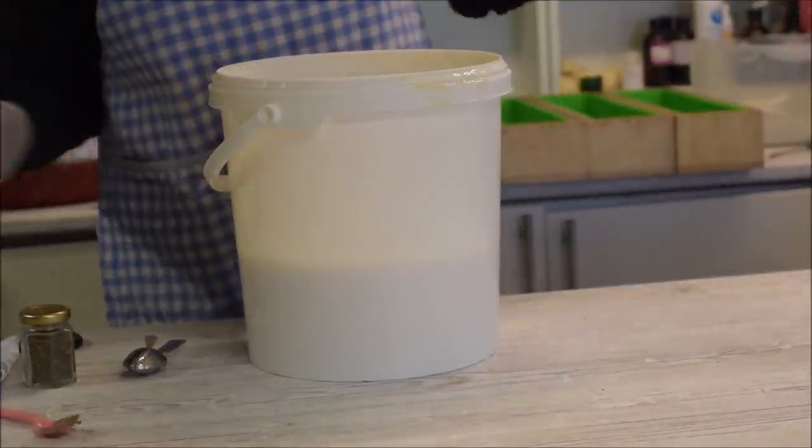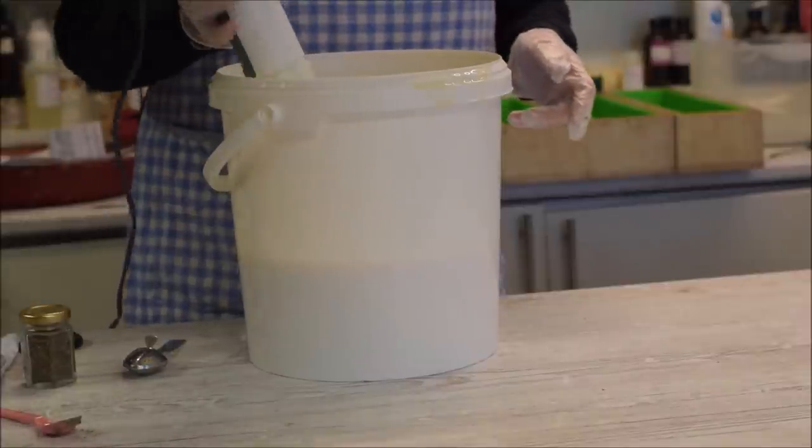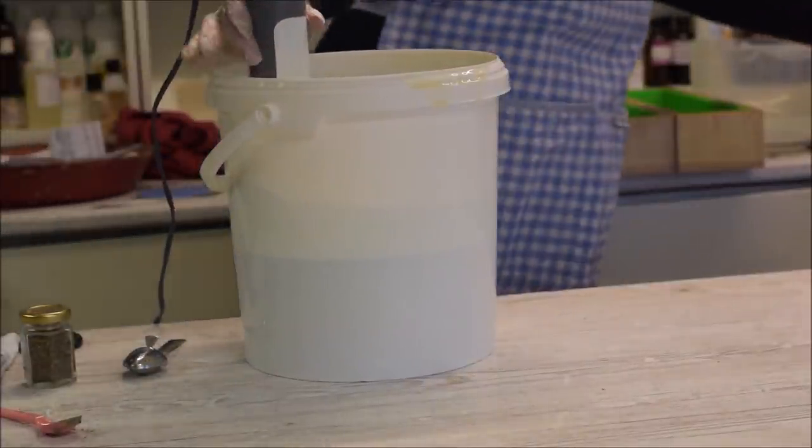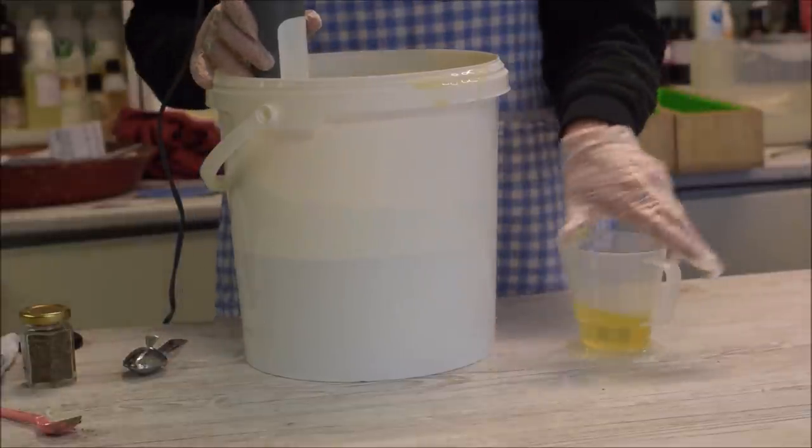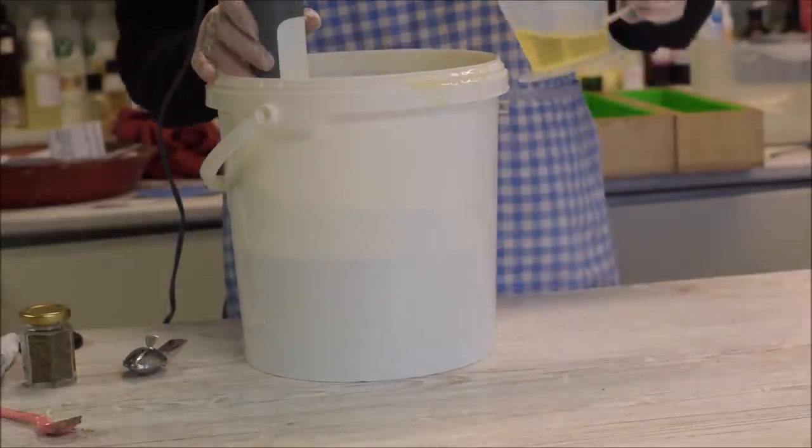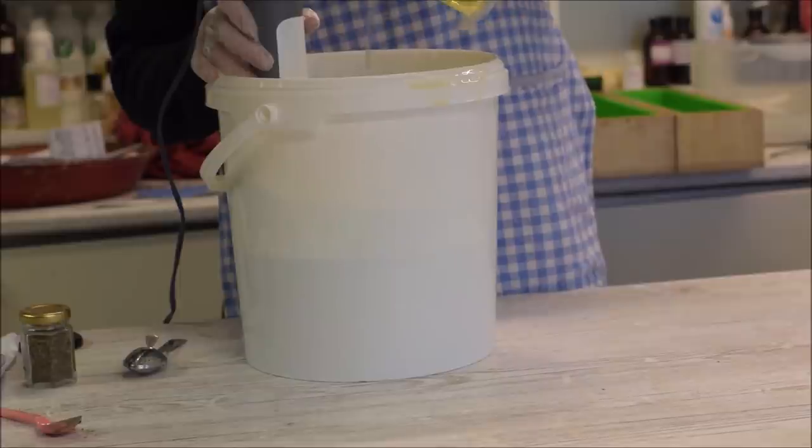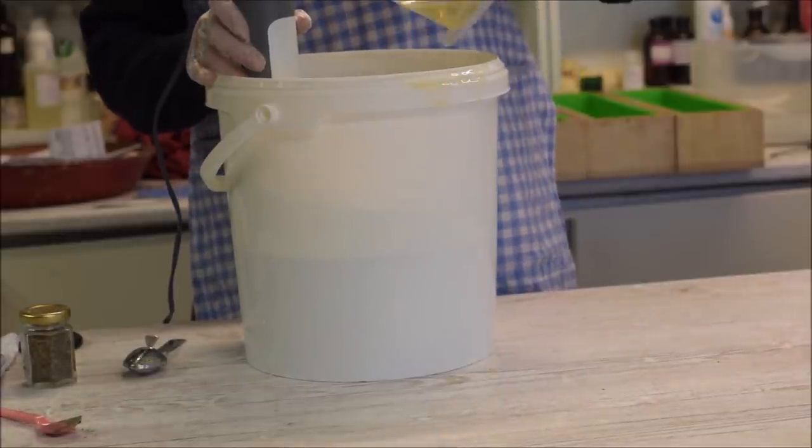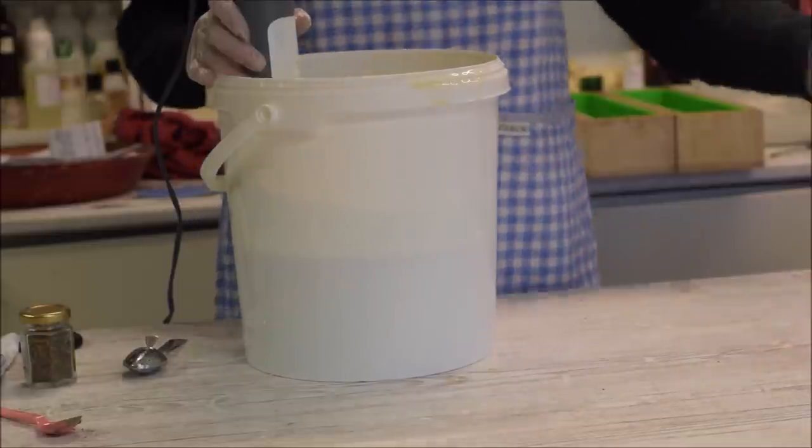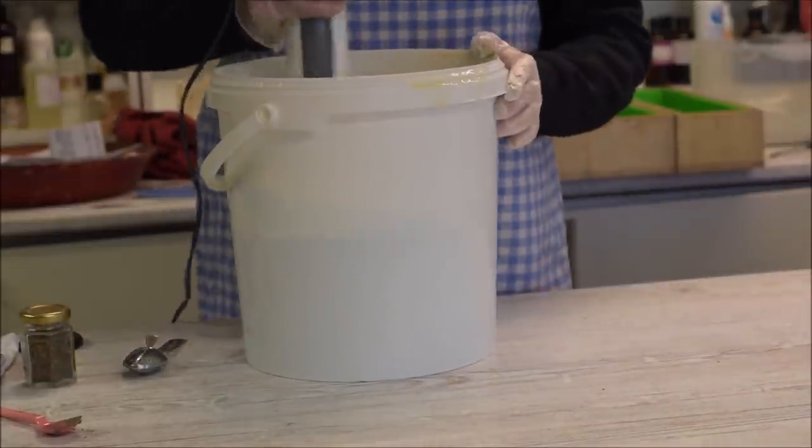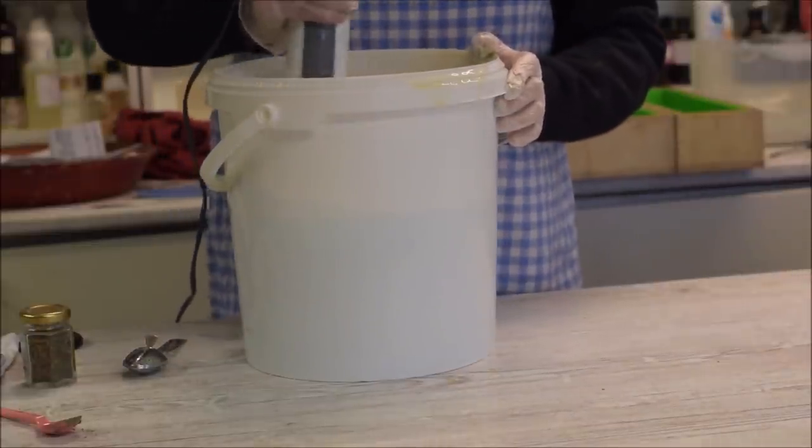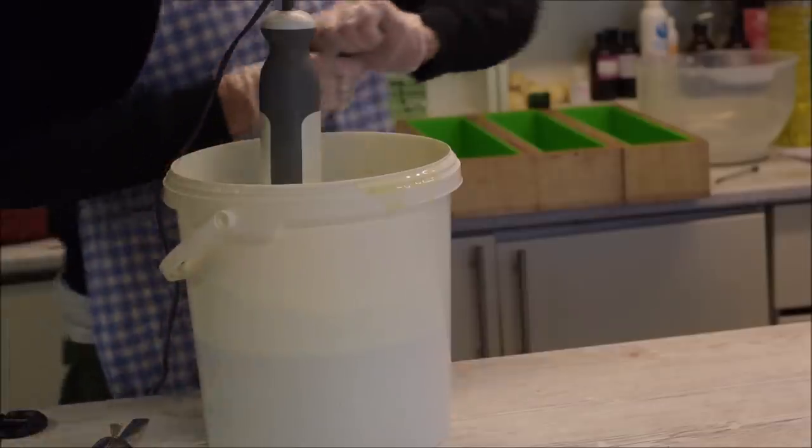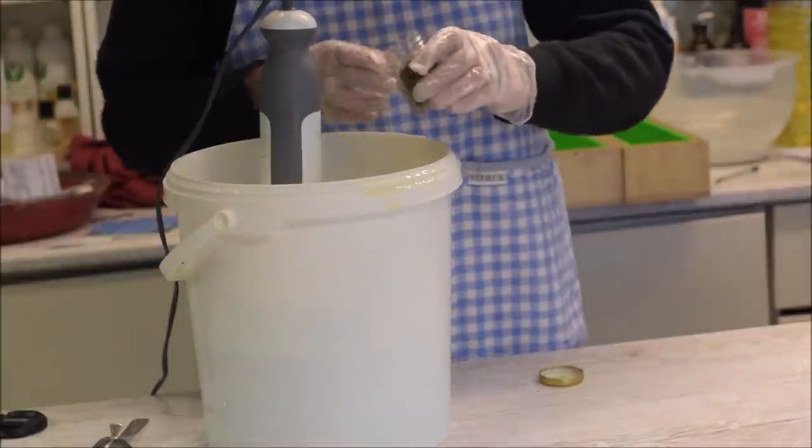Now I'm going to pour in some of my fragrance. I'm using 80 ml here, I'm only doing two loaves. Just reserve a bit for the white, not too much. And then I'm just going to sprinkle in my mint.